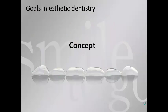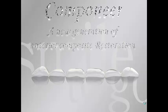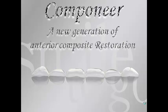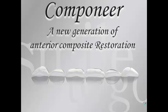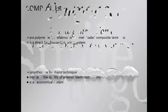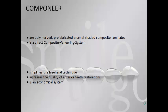The Componeer is a new generation of anterior composite restorations. They are polymerized, prefabricated, enamel-shaded composite laminates. It is a direct composite veneering system that simplifies the freehand technique, increases the quality of anterior teeth restorations, and is economical.